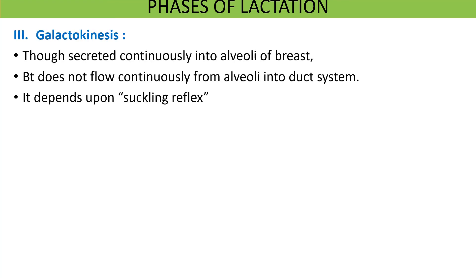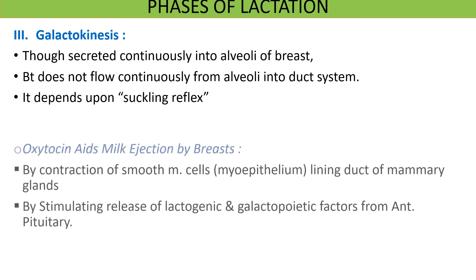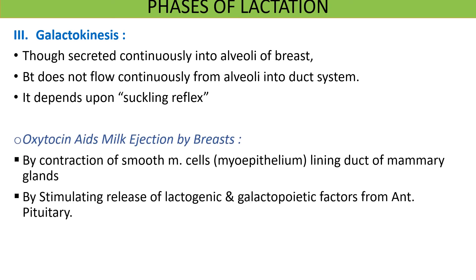The third phase of lactation is galactokinesis, meaning expulsion of milk. For continuous milk expulsion from the breast, the suckling reflex and some local mechanisms are required to act on the breasts. Apart from the suckling reflex, the hormone oxytocin helps in milk ejection from the breasts. Oxytocin contracts the smooth muscle cells of the mammary glands and also stimulates the release of lactogenic and galactopoietic factors from the anterior pituitary gland.